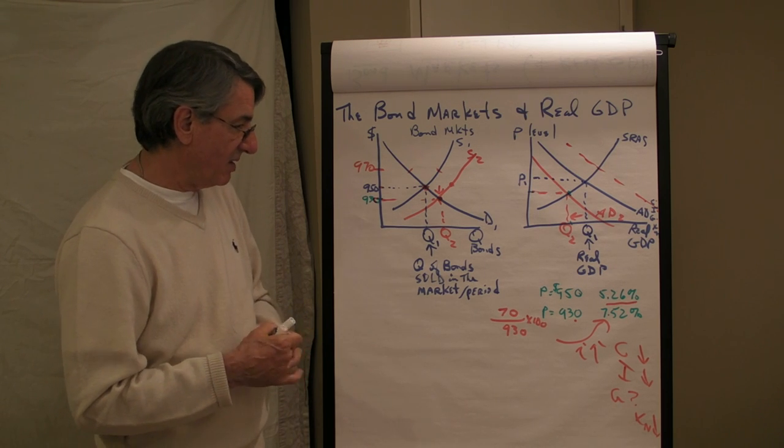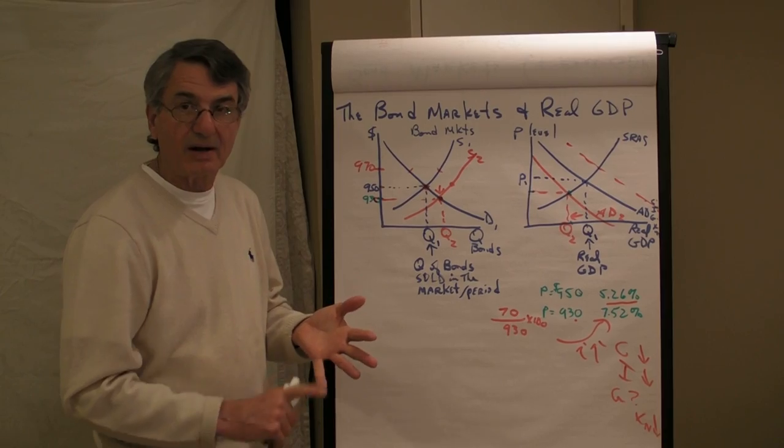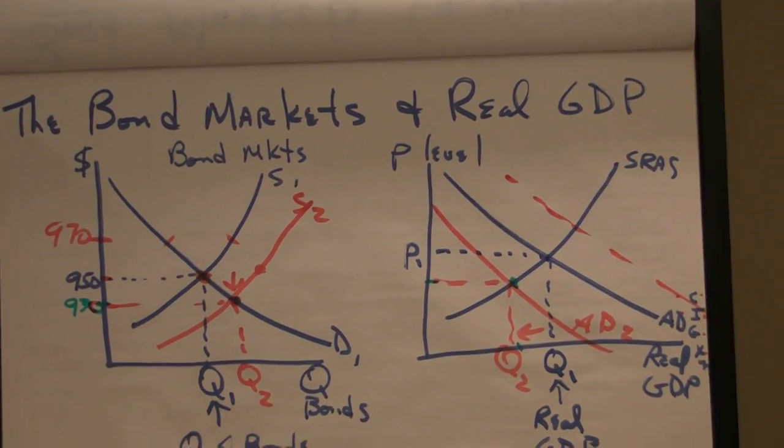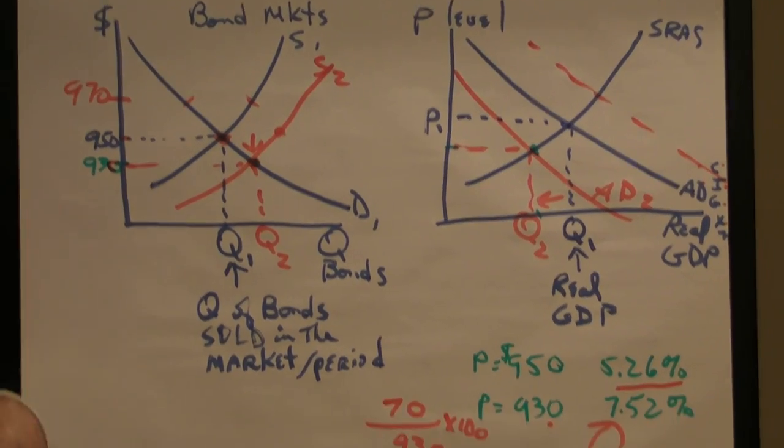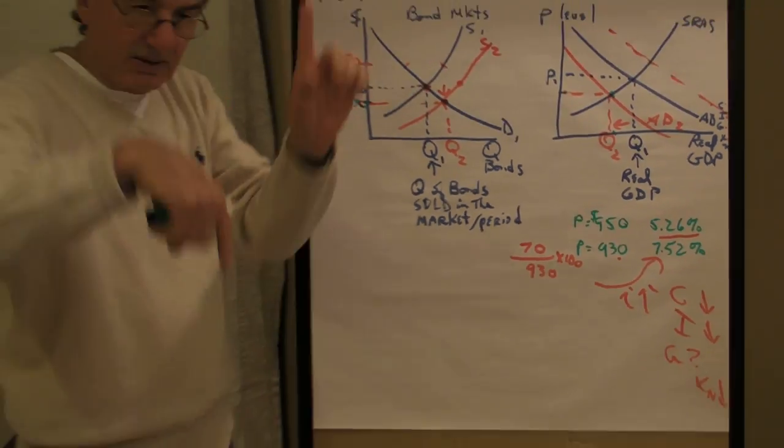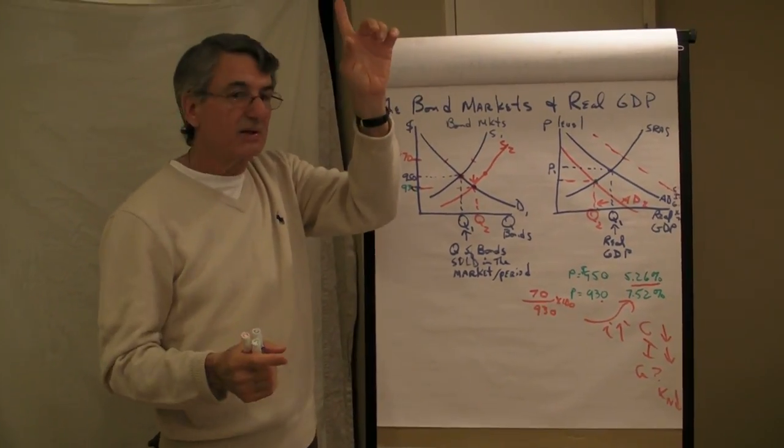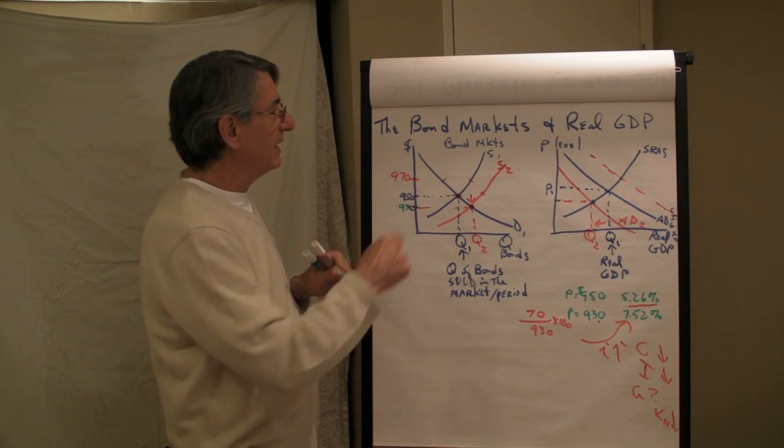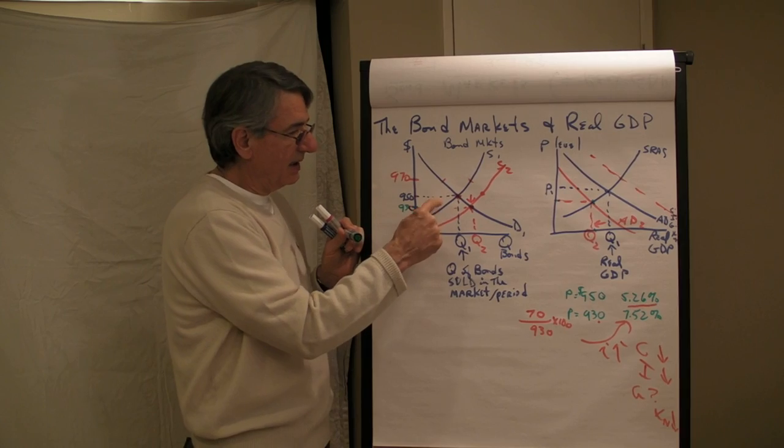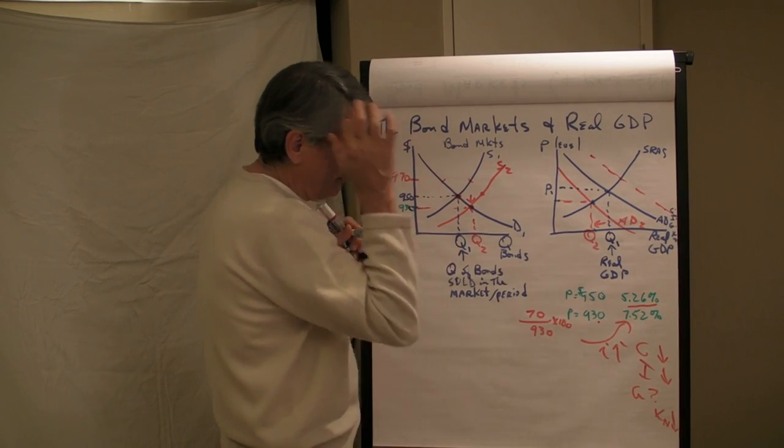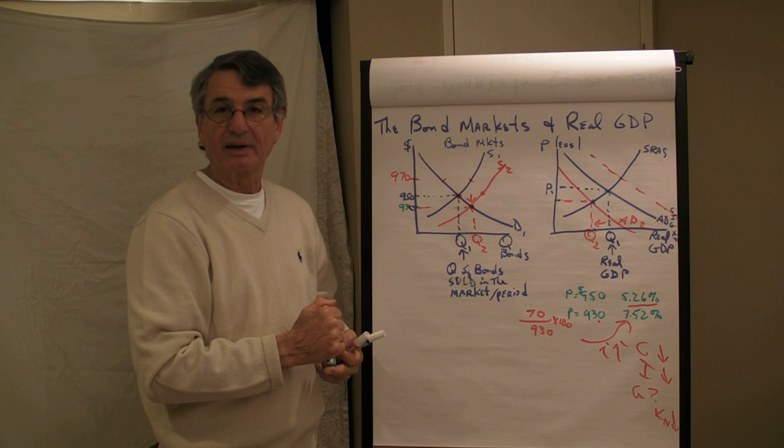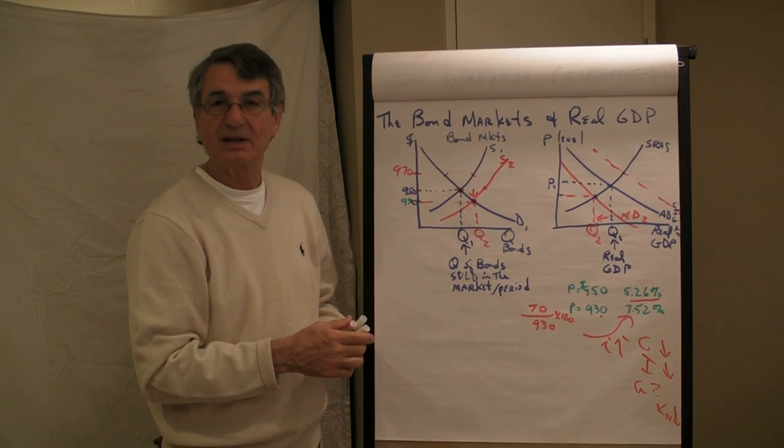So this is a little video that attempts to explain the bond markets, what bonds are. The relationship between bond prices and interest rates, they're inversely related. When bond prices go up, interest rates go down, or vice versa. If interest rates go up, the value of the bonds goes down. Then we connect the bond markets and interest rates to real GDP. So I think that's about it. See you next time.